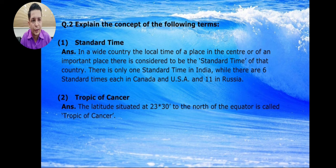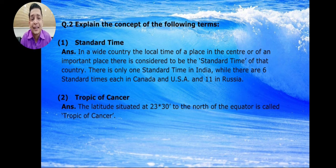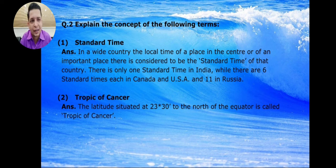In a wide country, the local time of a place at the center is considered the standard time of that country. India has only one standard time. The USA and Canada each have six standard time zones, and Russia has eleven time zones because Russia is a very large country.